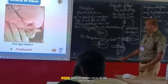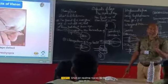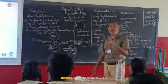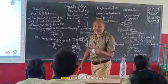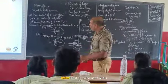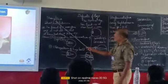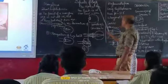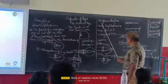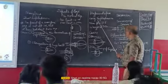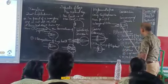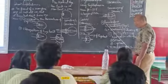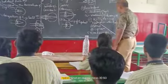The fourth type which I have explained is not mentioned here — that is astigmatism. So the three main types are myopia or short-sightedness, hypermetropia, and presbyopia or old age hypermetropia, and the fourth one is astigmatism.